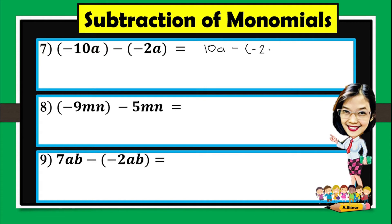Number 7: What's the opposite? That's correct — positive 2a. Then we are going to add and simply copy 10a. So 10a plus 2a — the answer is 12a.